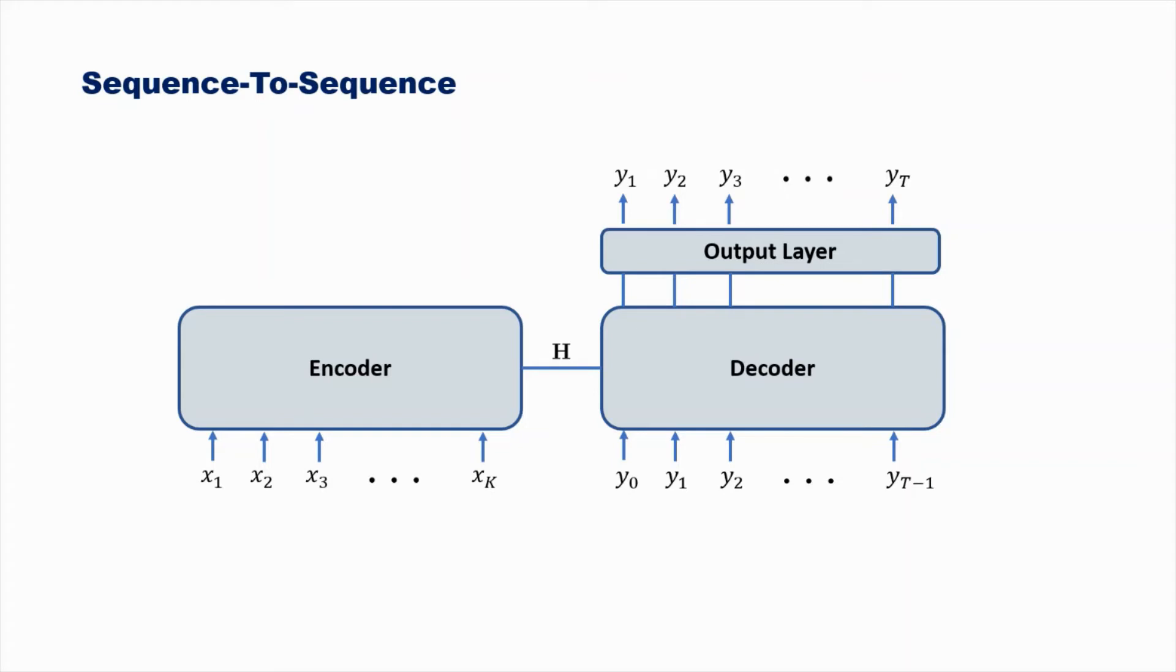At inference time the labels are not known and hence one token is generated at a time and fed back into the decoder along with the hidden representation to generate the next token.